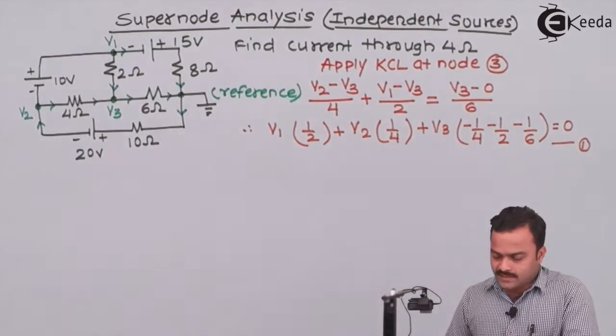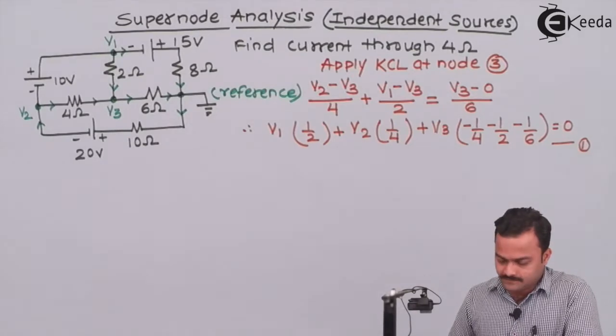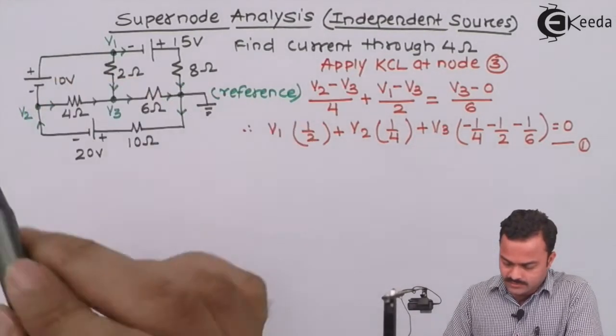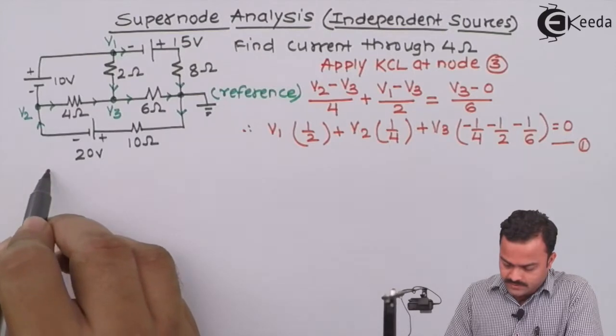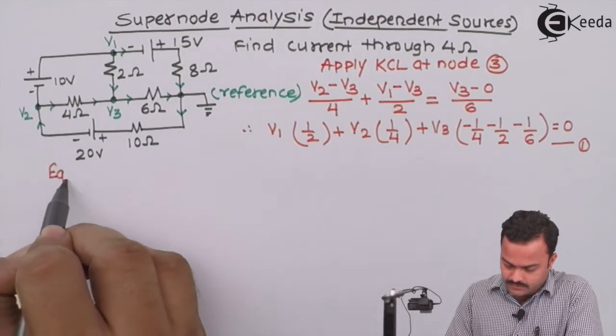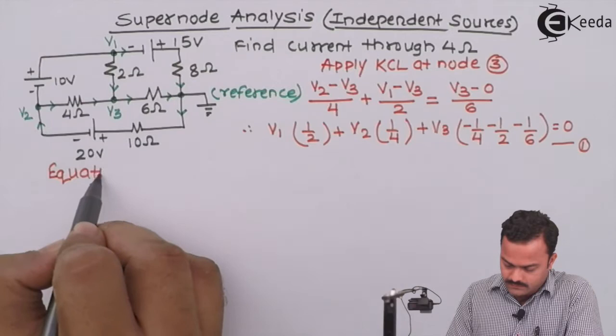Three nodes are there, so three equations we should get. Now this is a voltage source, so a voltage source equation we need to write. So we'll write it under equation of voltage source.